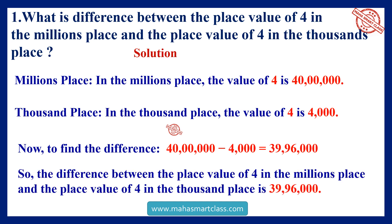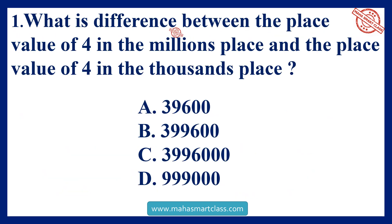So, the difference between the place value of 4 in the millions place and the place value of 4 in the thousands place is 39,96,000. Answer is option C: 39,96,000.